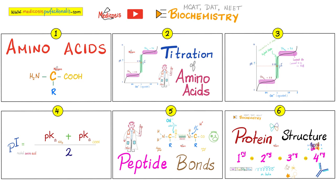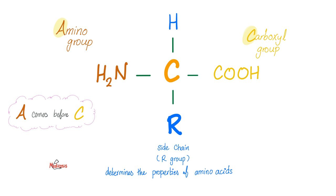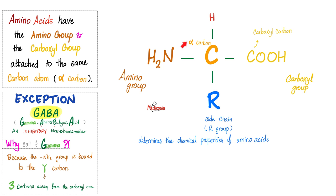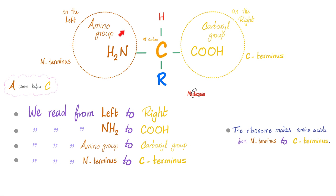The amino acid is made of an amino group to the left, carboxyl group to the right, the side chain or R group, and just a hydrogen there. What's the name of this carbon? Alpha carbon. The left one is the N-terminus, the right one is the C-terminus. That's why it's called amino acid.